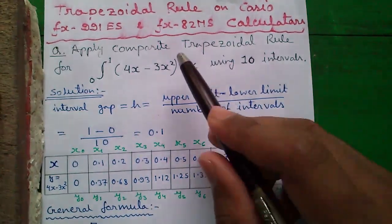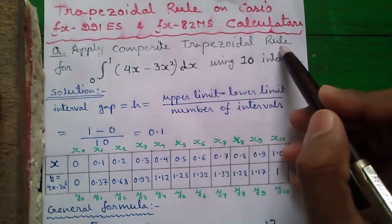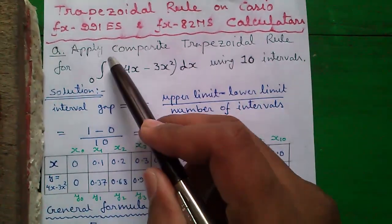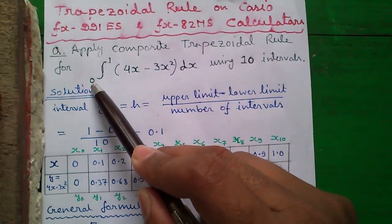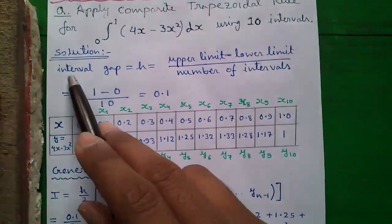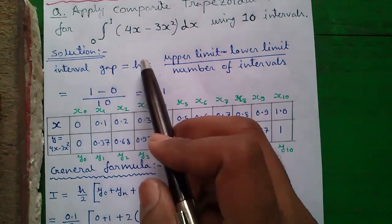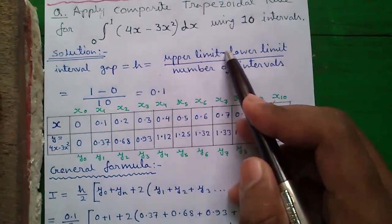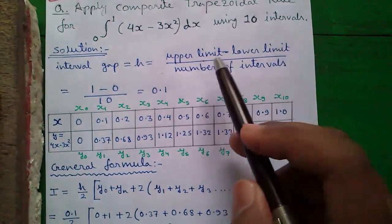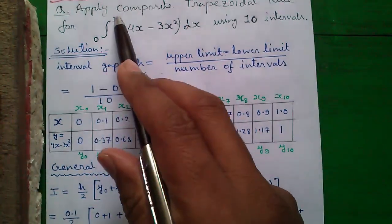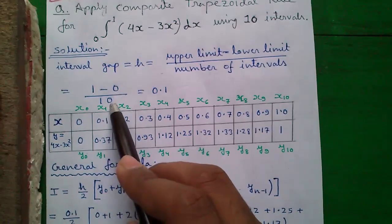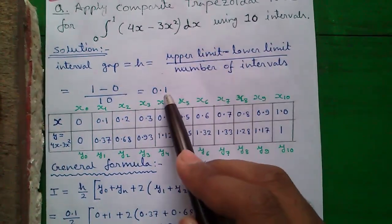Our question is apply composite trapezoidal rule for integration of 4x minus 3x square with upper limit 1 and lower limit 0 using 10 intervals. By solution, the interval gap or h equals to upper limit minus lower limit divided by number of intervals, that becomes 1 minus 0 divided by 10 equals to 0.1.